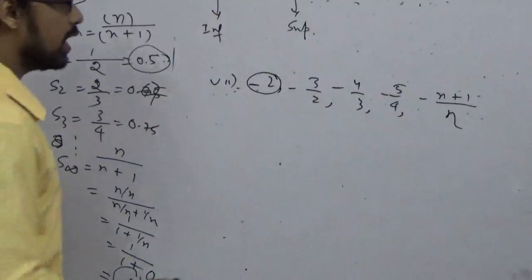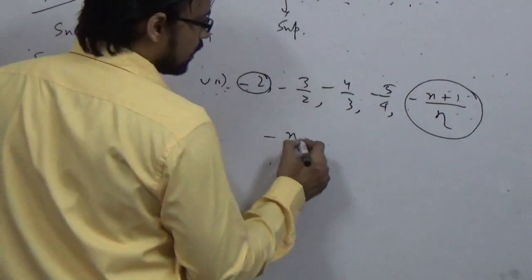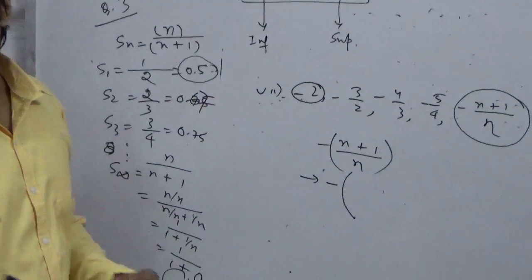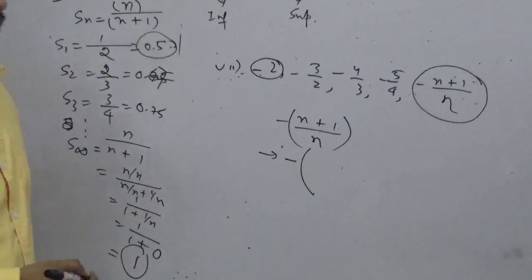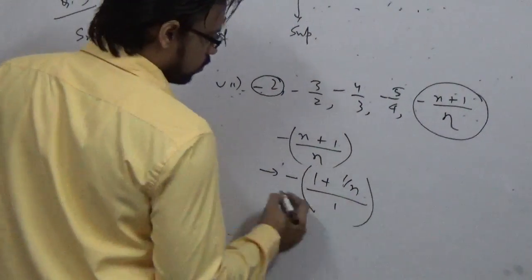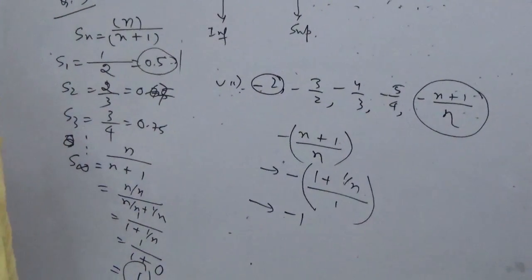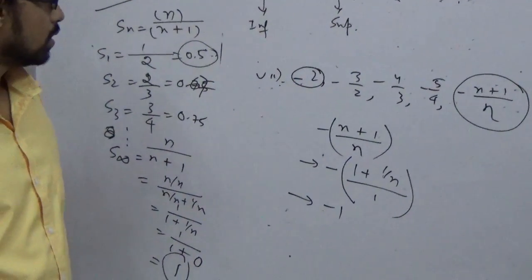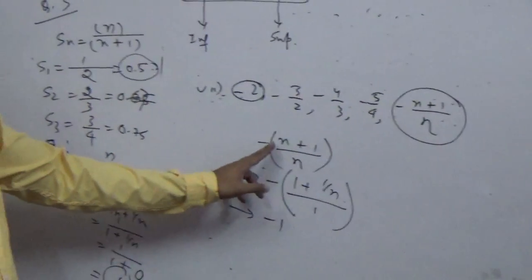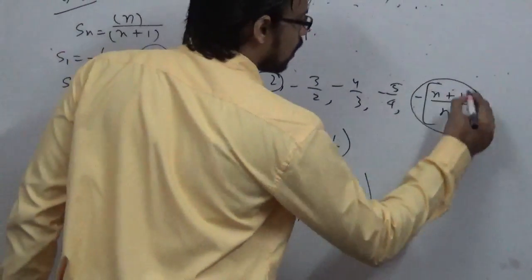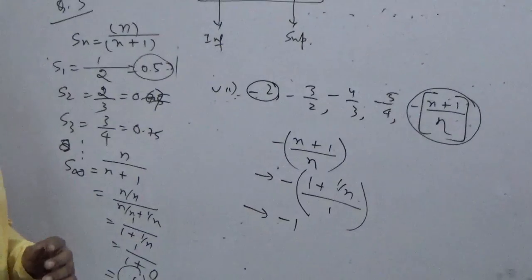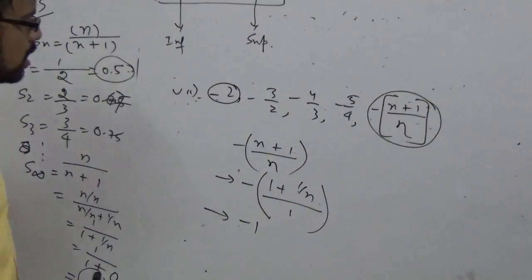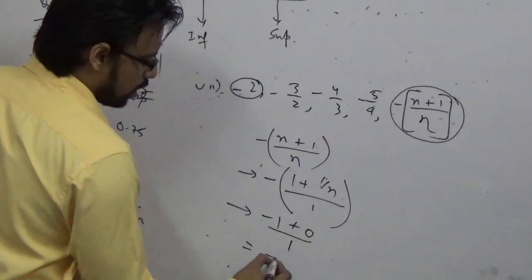Your job is with the general term minus (n plus 1) by n. Whenever numerator and denominator have the same power, divide by n — just like the limit classes. So this becomes minus (1 plus 1 by n) divided by 1. As n tends to infinity, 1 by n tends to 0, so it becomes simply minus 1. So the sequence lies between minus 2 and minus 1. Minus 1 is higher than minus 2.